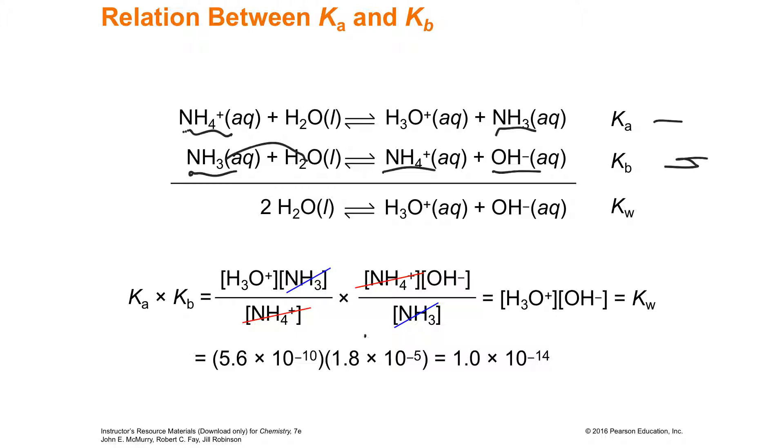The K sub B is just the equilibrium constant for this. This one, this one, divided by this one. But what you're going to see is that they're backwards of each other.